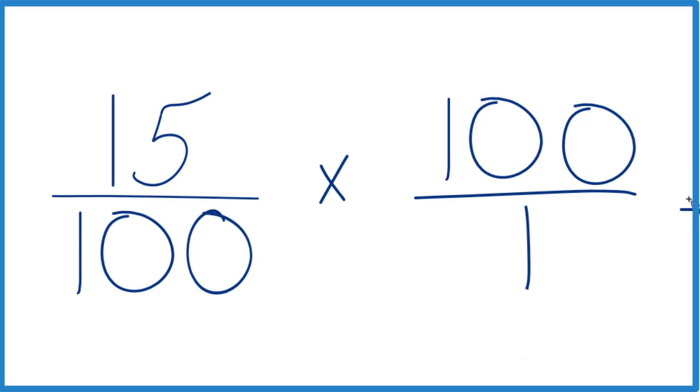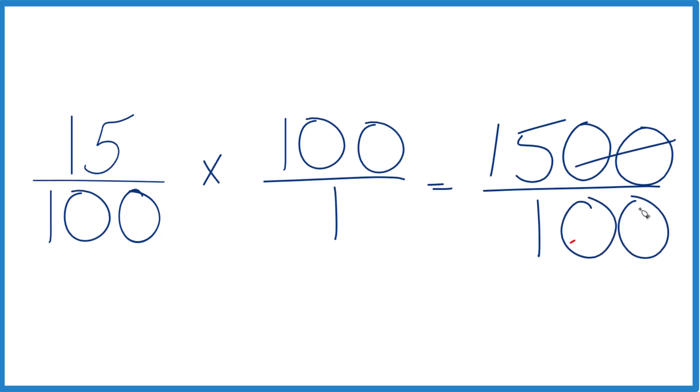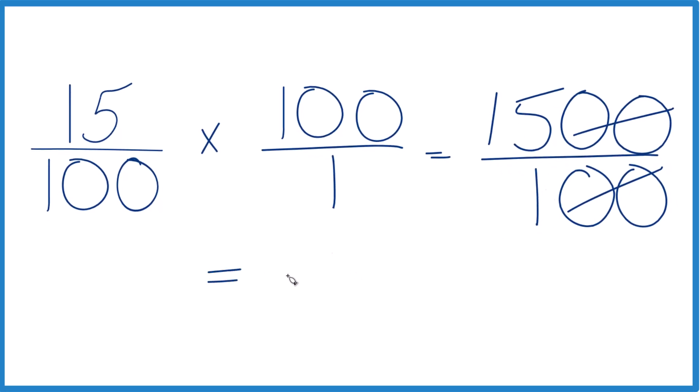15 times 100, that's 1,500. And then 100 times 1, that is 100. So we divide, cross these zeros out, we have 15 over 1, and that just equals 15. Same thing we found before.